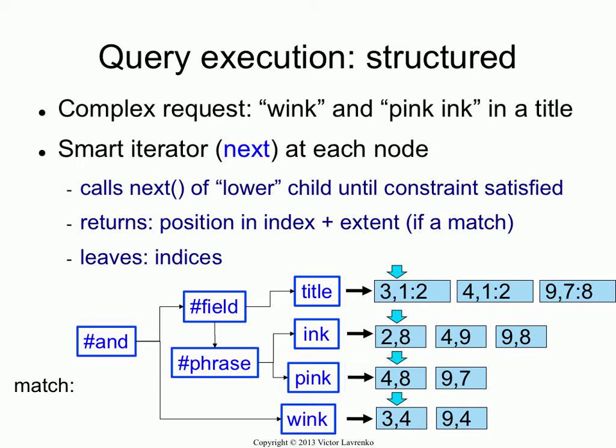So last time we left off, we were talking about query execution methods. We talked about term-at-a-time and document-at-a-time execution, but all of the examples we had were for relatively simple scoring functions — we were looking at linear scoring functions, which could be done with either document-at-a-time or term-at-a-time. What I said is that sometimes you have scoring functions which are not quasi-linear and which you couldn't do with term-at-a-time, but I didn't give you an example. So here is an example.